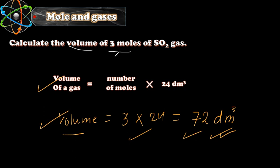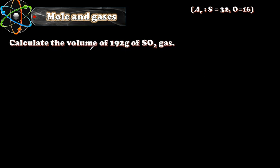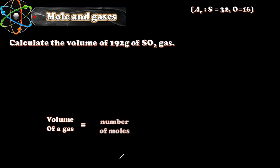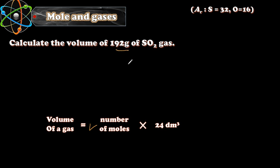Sometimes they do not give you the number of moles — they give you the mass, and you first need to find the number of moles, then calculate the volume. Here's an example: calculate the volume of 192 grams of sulfur dioxide gas. Volume of gas equals number of moles times 24 dm³, but we don't have the number of moles — we have the mass — so we need to find the number of moles first.